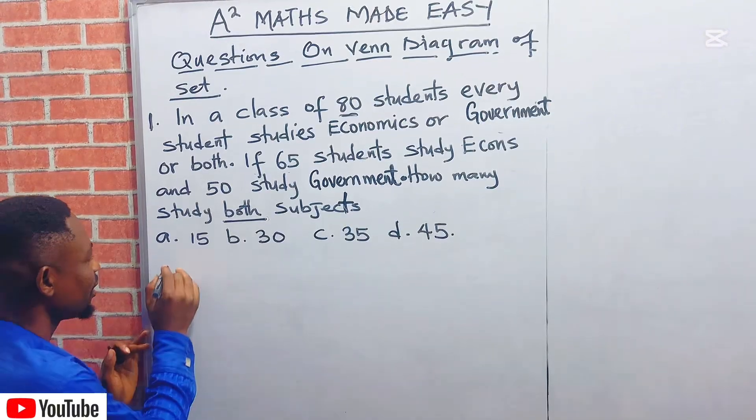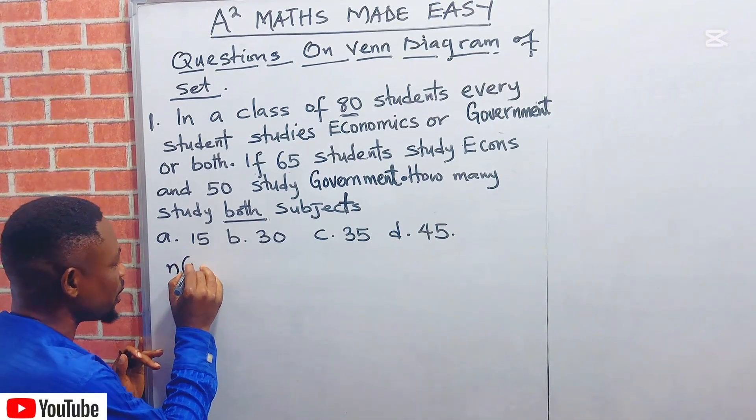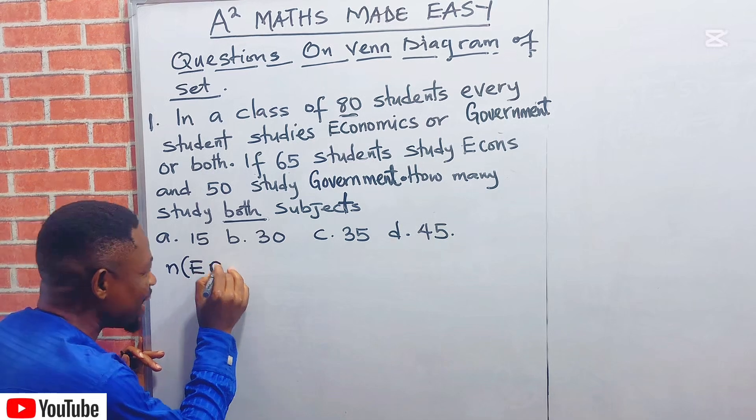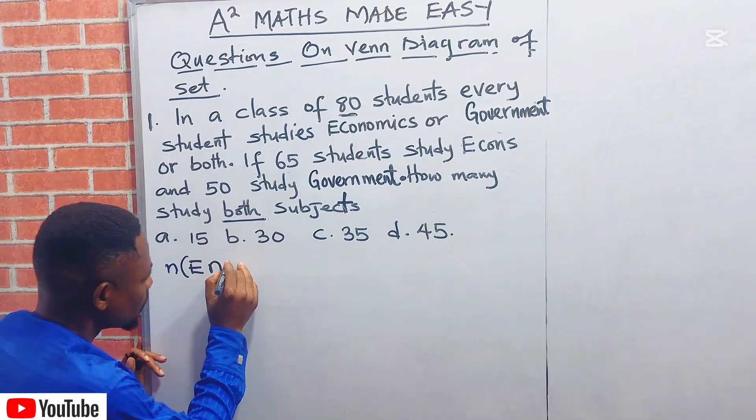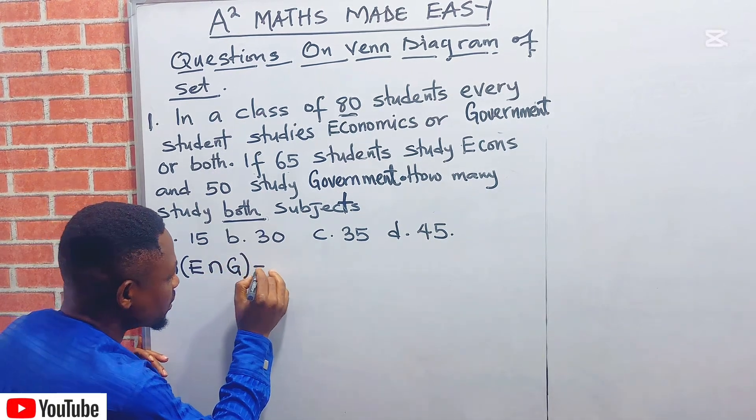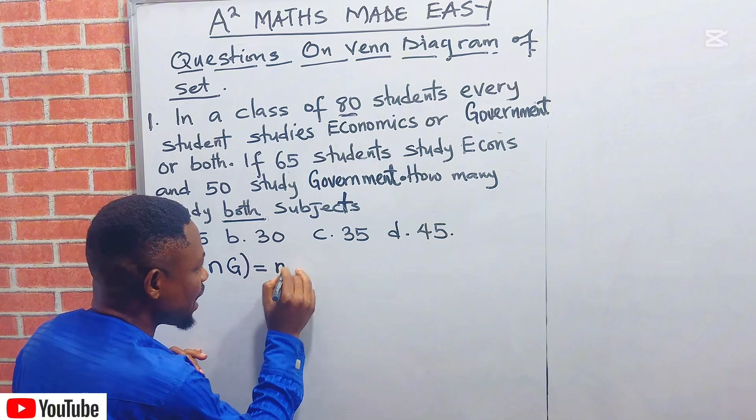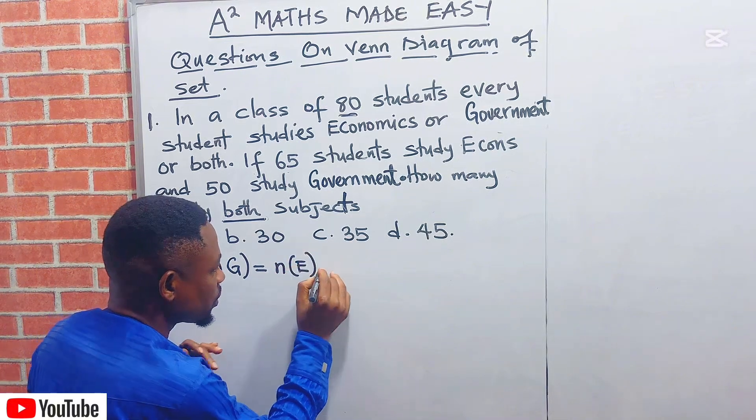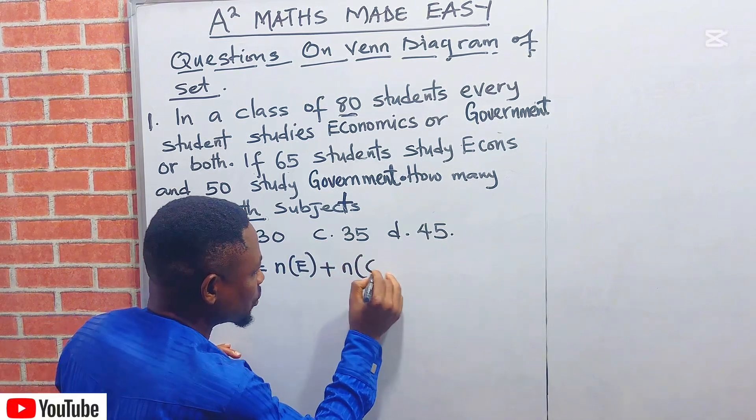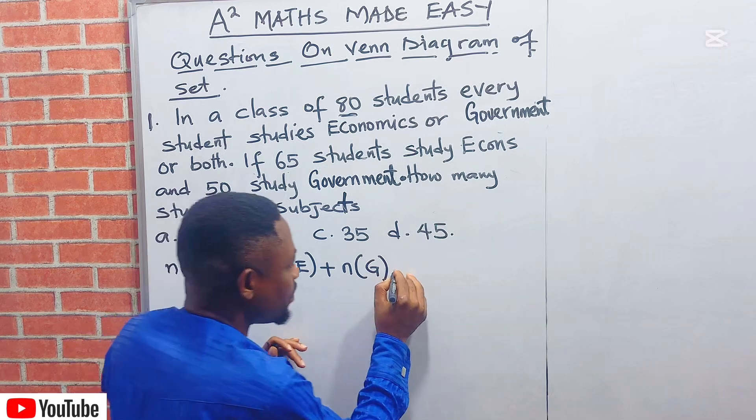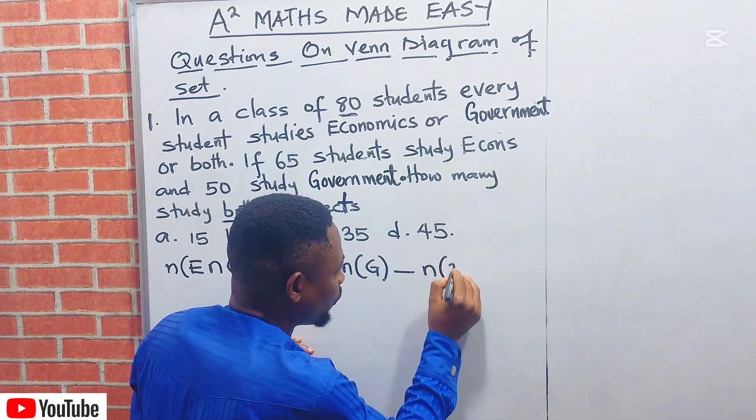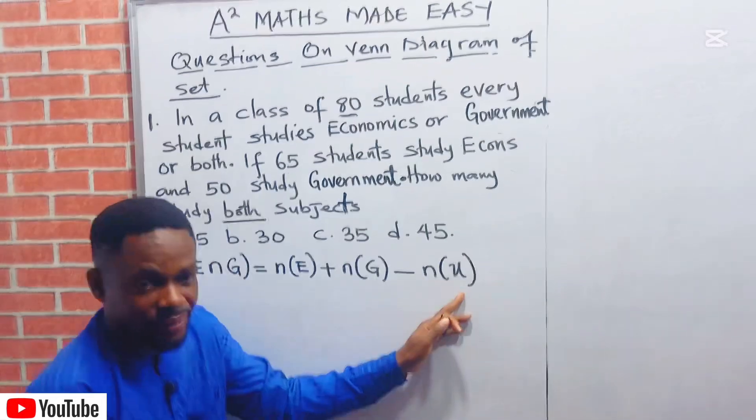Remember, there are two things: Economics and Government. The cardinality of the students that study Economics and Government, which means both, is equal to the cardinality that study Economics plus the cardinality that study Government, then minus the cardinality of the universal set.